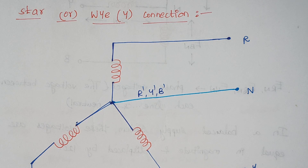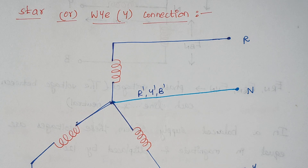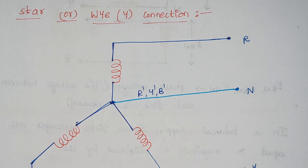Hello viewers, I am Kausalya. Today we are going to discuss about star connection. Basically there are two types of interconnections — the way which we connect our coil. One is known as star and another one is known as delta. In this video we are going to discuss about the star network.